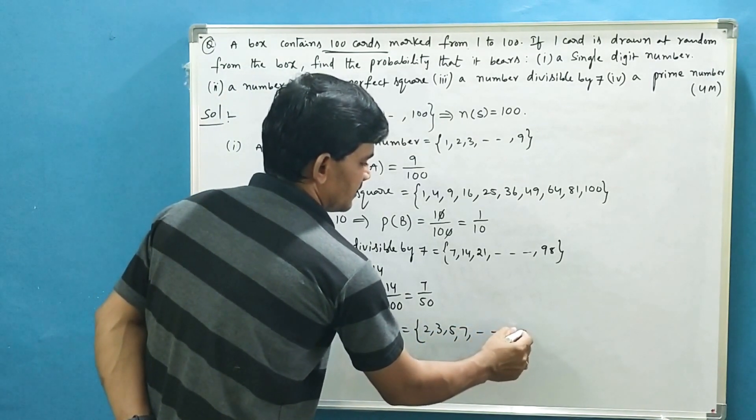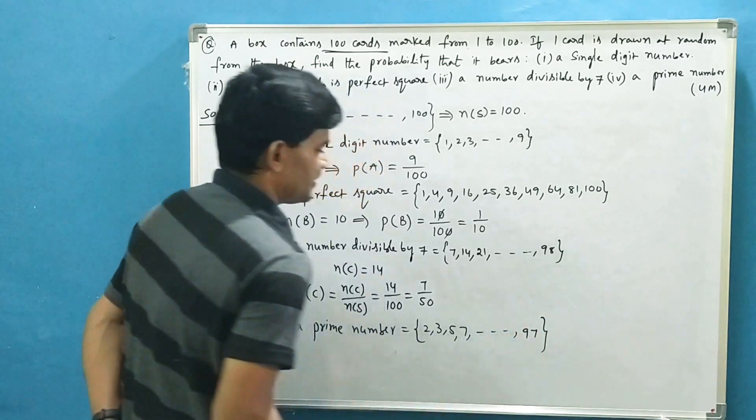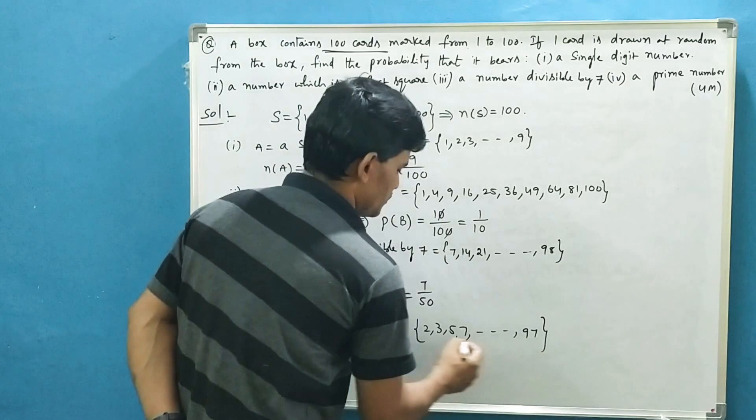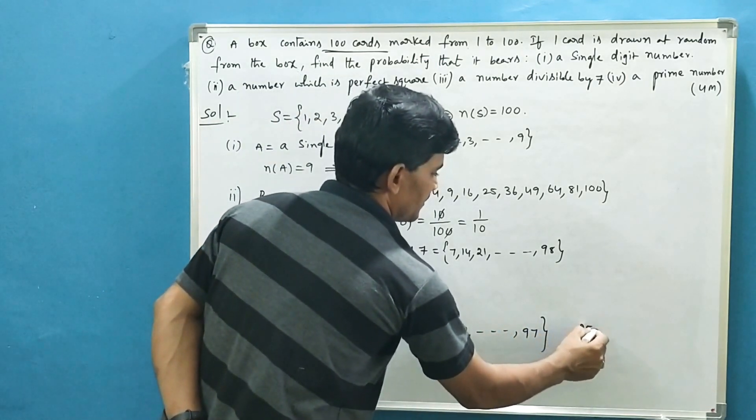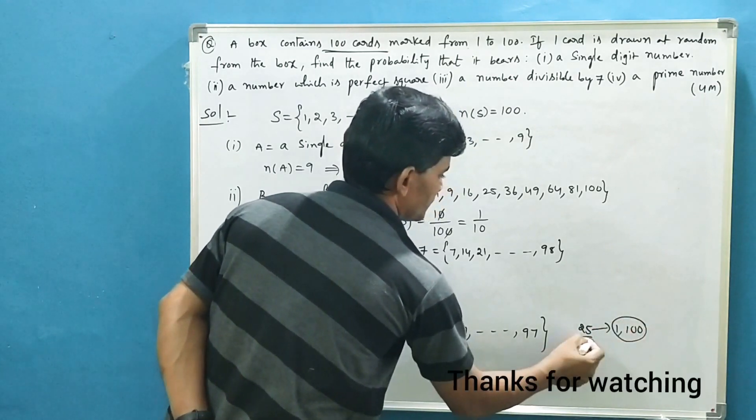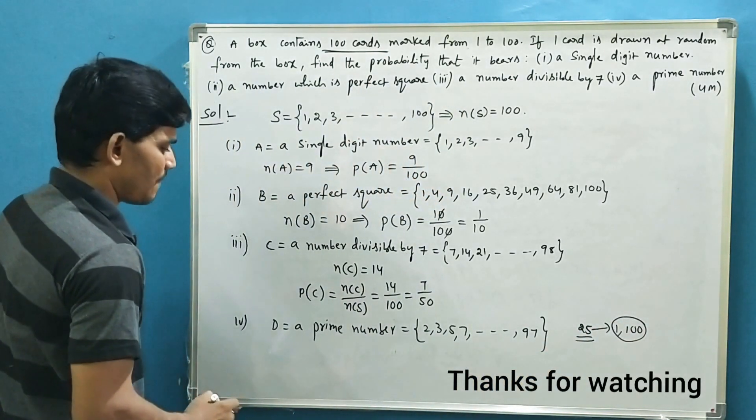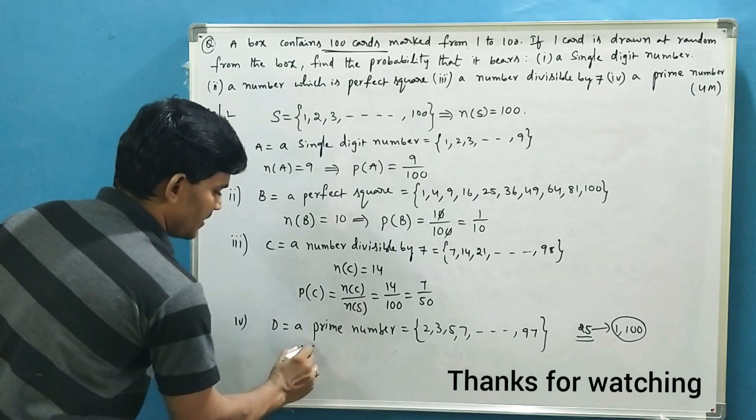The last prime number is 97. So how many prime numbers? We should have some understanding here. There are 25 prime numbers between 1 to 100. So this is the number of favorable outcomes, that is n(D).